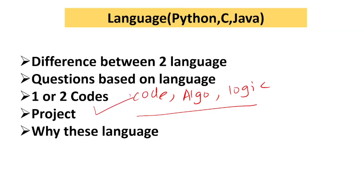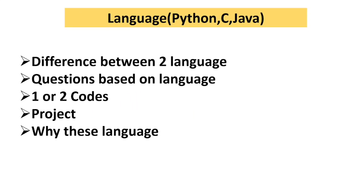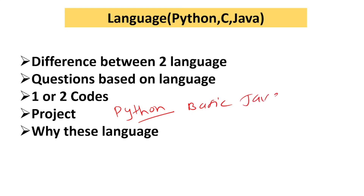Your language and project must match. If you say you know Python but your project is in Java — especially if you copied a friend's project — you will get directly rejected. If you say you are good with Python, your project must also be in Python, or you must say you have at least basic knowledge of Java which you used in the project. Don't mismatch.